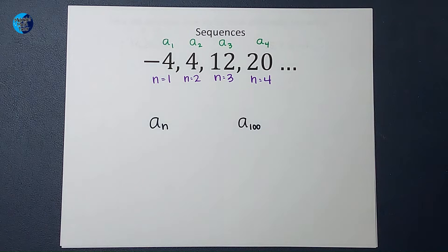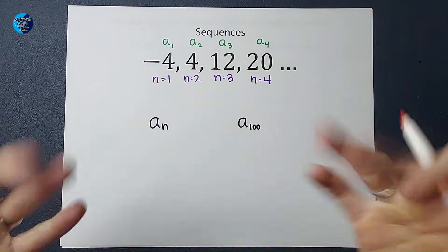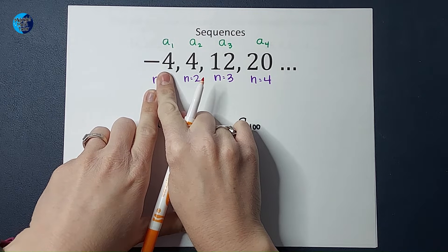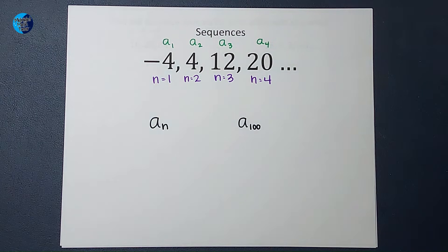When you're working with these, you're going to see a lot of A's and a lot of N's. The N refers to the place it is in line, basically, the place in the sequence. So n equals one is the first number in the sequence. n equals three is the third number in the sequence and on it goes, right?